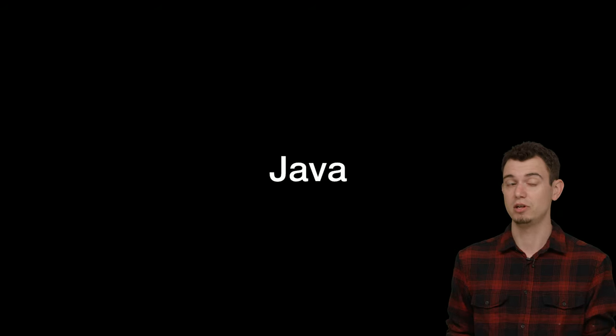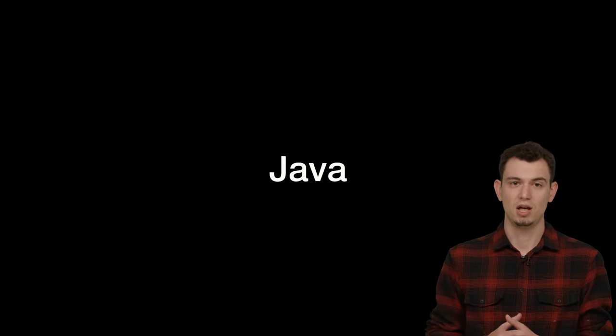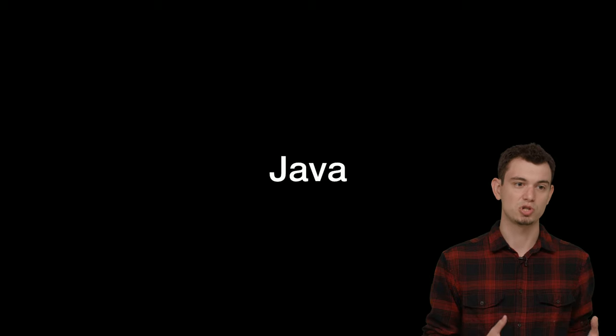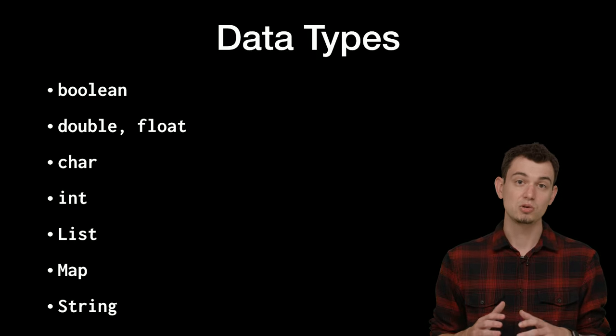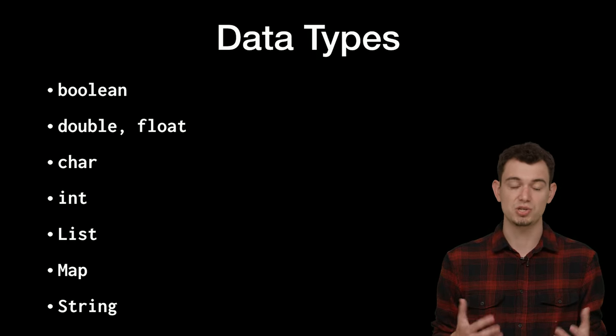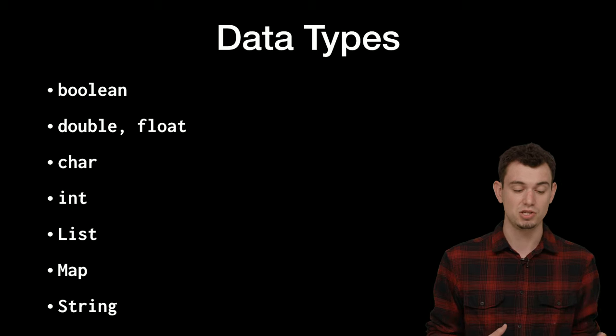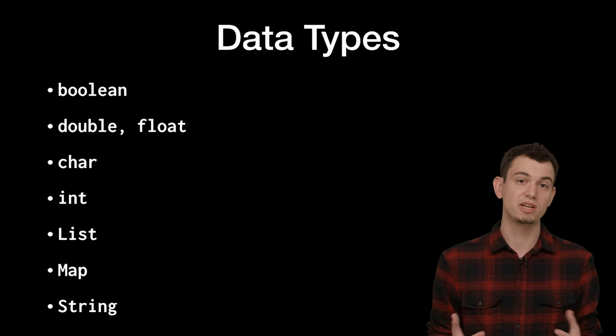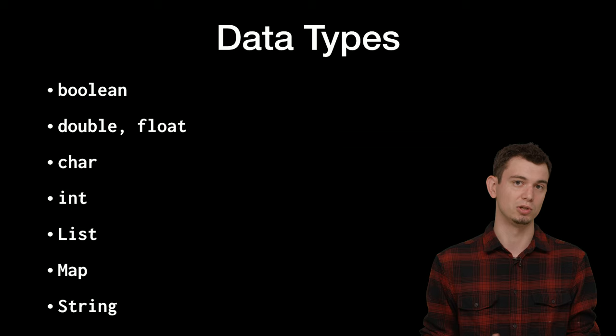Before we start writing any Android code, let's walk through a little bit of the syntax of the programming language we'll be using — Java. Google also supports Kotlin, which is pretty similar to Java, but throughout these videos we'll just be using Java. Java is a little similar to C — it has some differences, but also a lot of similarities. Let's start by looking at all of the data types available in Java.